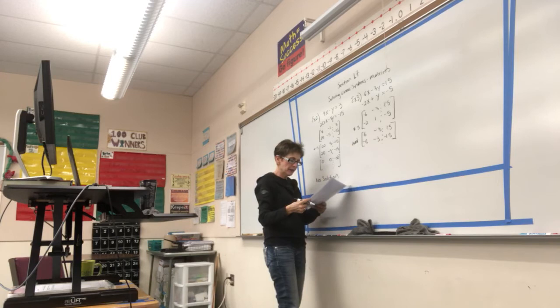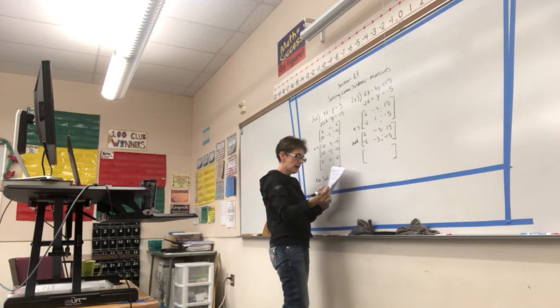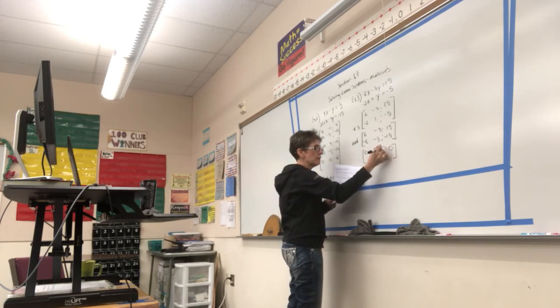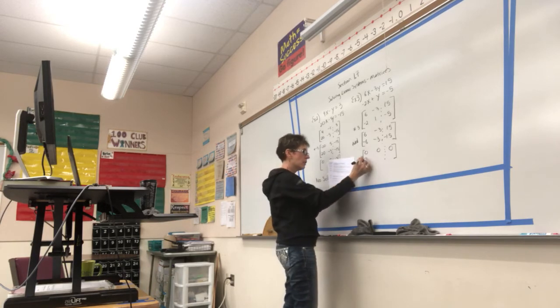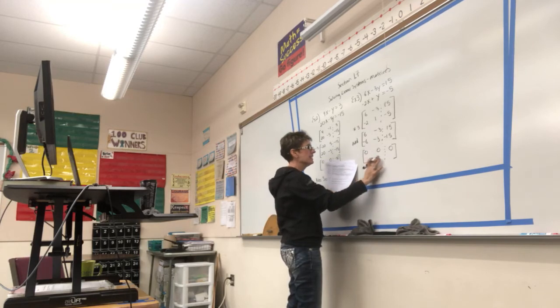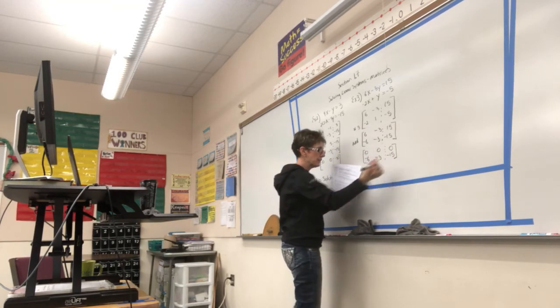Now, I'm going to add the two lines together. When I do in my top row, I have 0, 0, and 0. And then in the bottom row, I still have negative 6, negative 3, and negative 15.